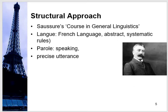The next approach is the structural approach. Ferdinand de Saussure's students compiled a book called Course in General Linguistics. He was a professor in Geneva and used to teach Gothic literature, Sanskrit, and other elements. He gave the concept of Langue and Parole. Langue is a French word meaning abstract systematic rules — all those rules of a language that are abstract but systematic. Parole is the practical aspect of language — when a person speaks or practices a language, that is called Parole.